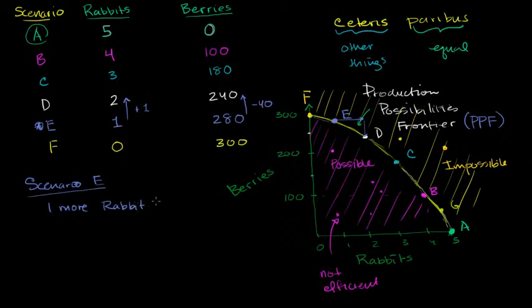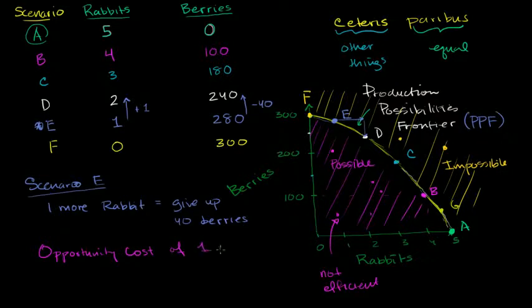So one more rabbit means that I have a cost. So I have to give up, on average, 40 berries. And the technical term for what I've just described is the opportunity cost of going after one more rabbit is giving up 40 berries. The opportunity cost of one more rabbit. And this is particular to Scenario E. As we'll see, it's going to change depending on what scenario we are in, at least for this example. So the opportunity cost of one more rabbit is 40 berries.